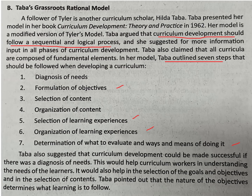The next submodel of the linear model is Taba's Grassroots Rational Model. This emphasizes that curriculum development should follow a sequential and logical process. It outlines seven steps — four of which are already identified in Tyler's linear model, meaning Taba added three significant elements or features to this model.